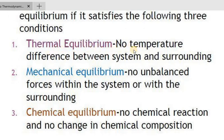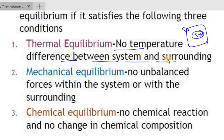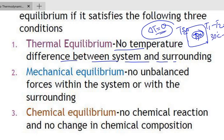There is no temperature difference between the system and the surrounding. The change in temperature, delta T, equals zero. For example, T1 equals T2, so T1 minus T2 equals zero — if T1 is 30 degrees and T2 is 30 degrees, delta T equals zero. This is thermal equilibrium.